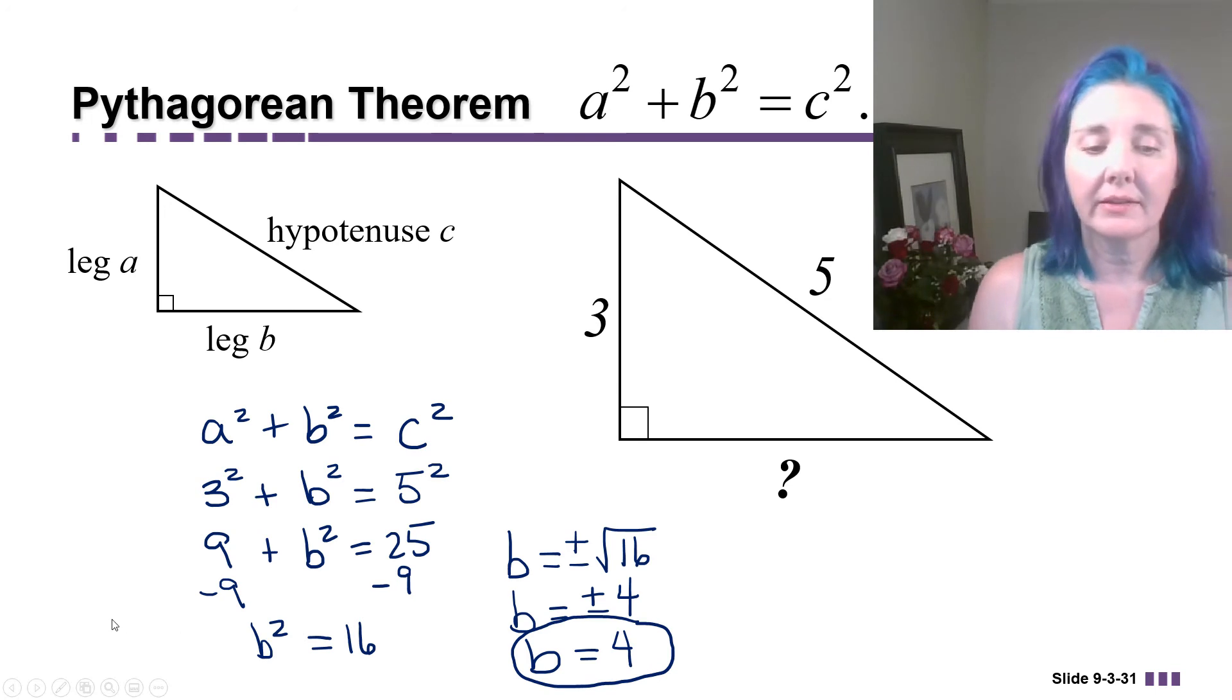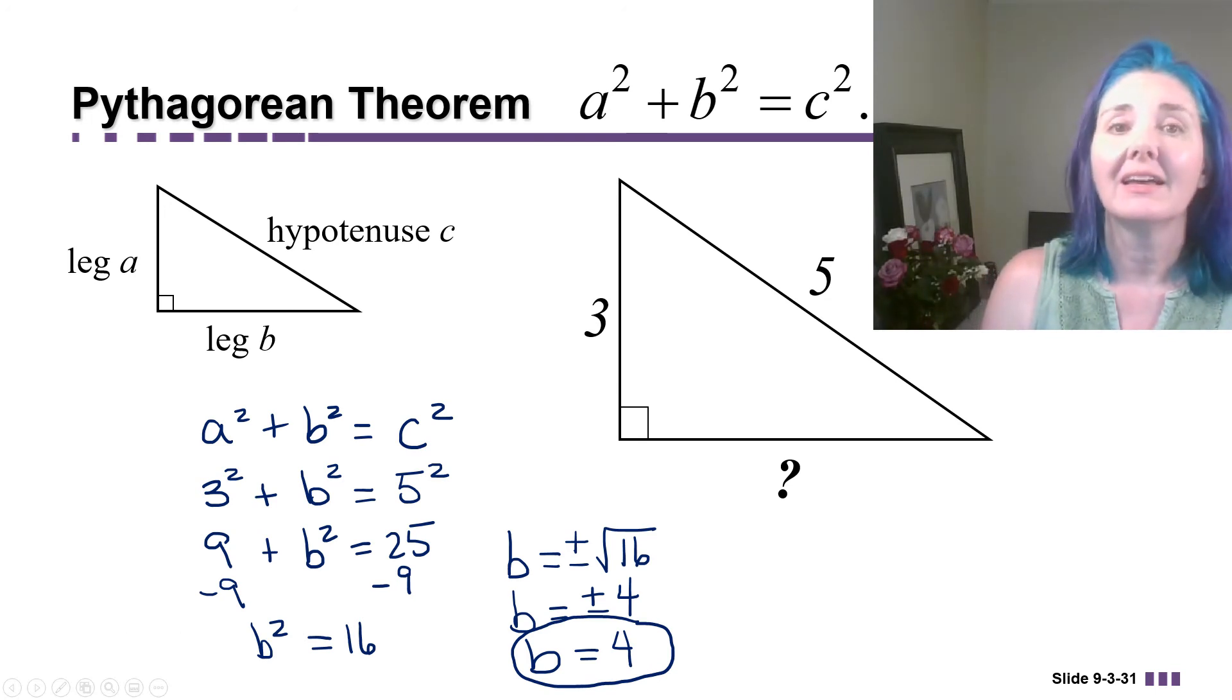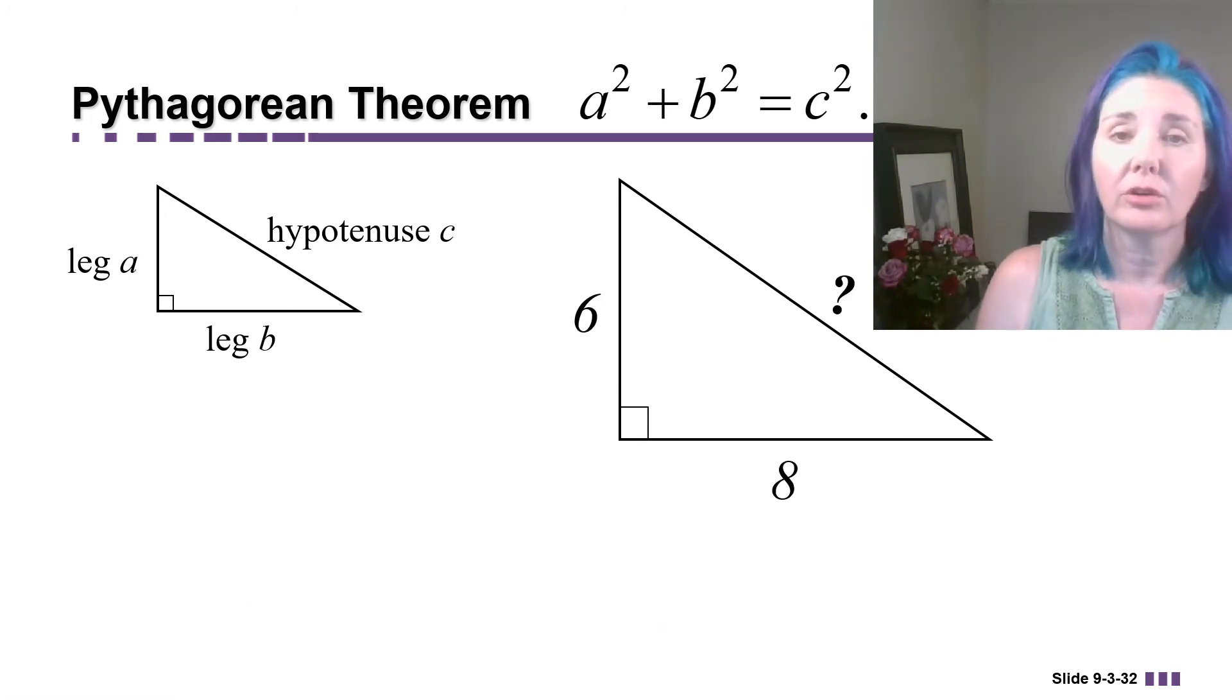Now let's look at an example where we're finding the hypotenuse. So what if I told you that one leg is length 6, the other is length 8, this is in a right triangle, and we're missing the side opposite the right angle, which means we're missing the hypotenuse.